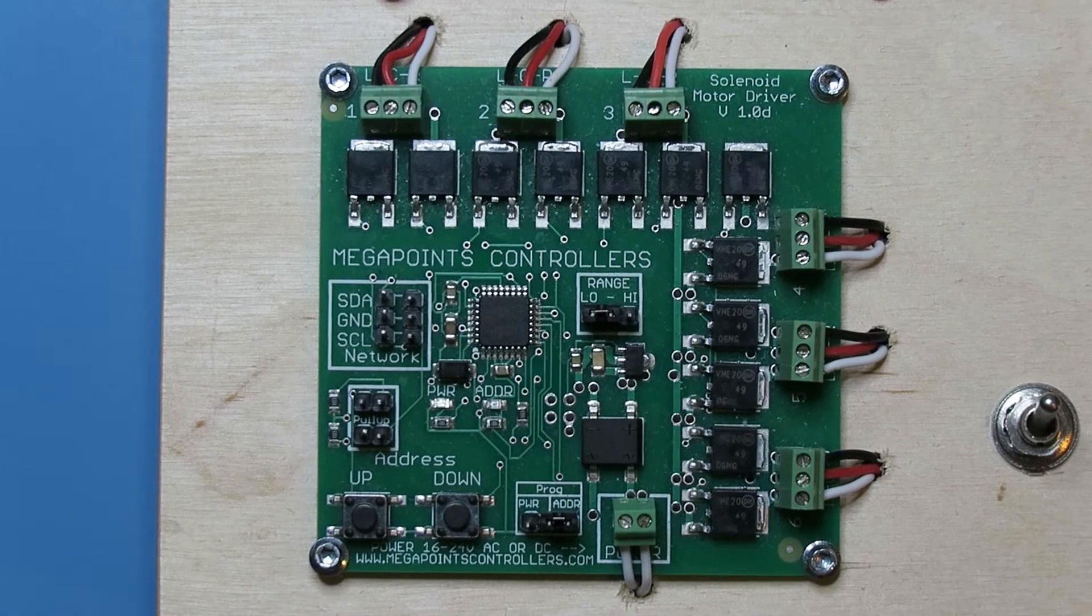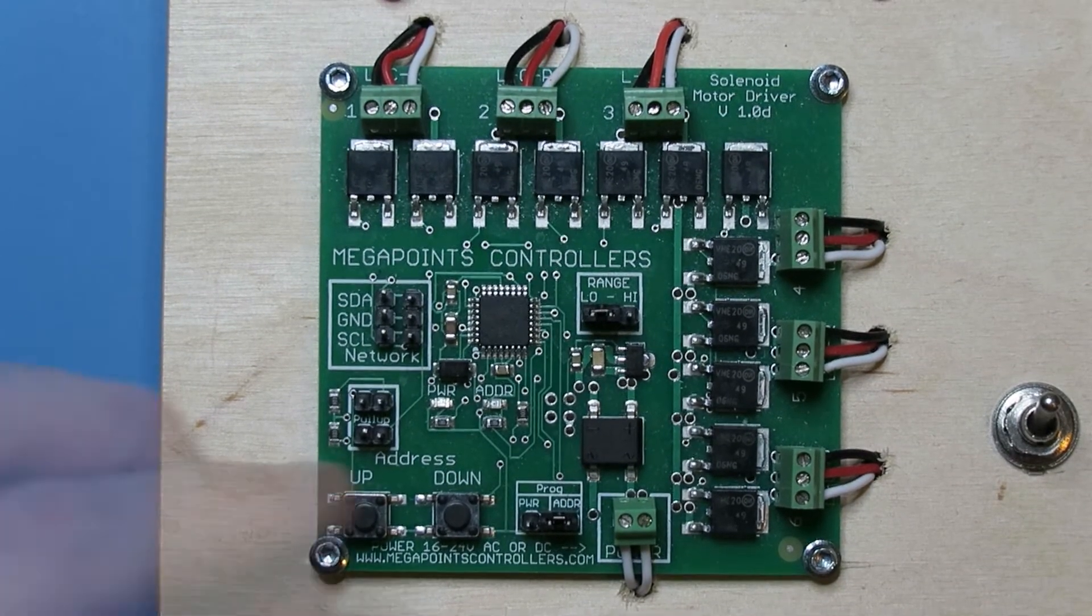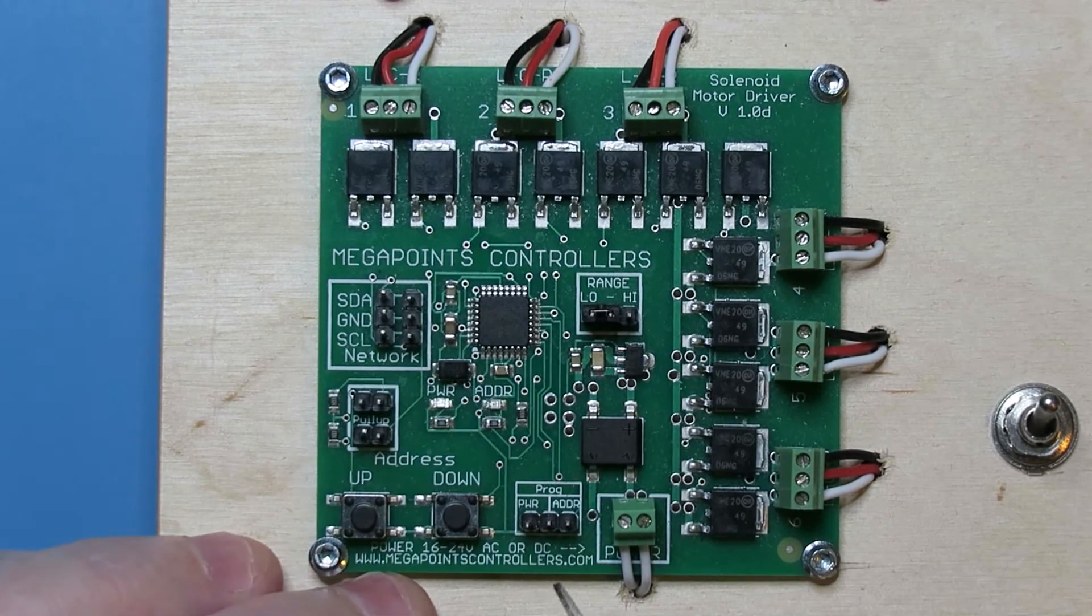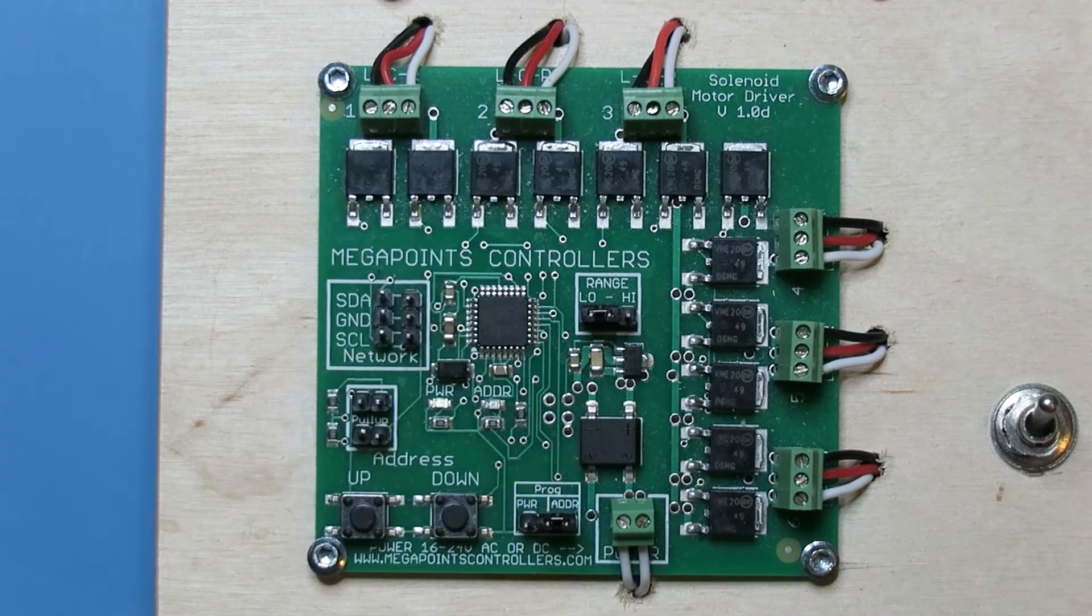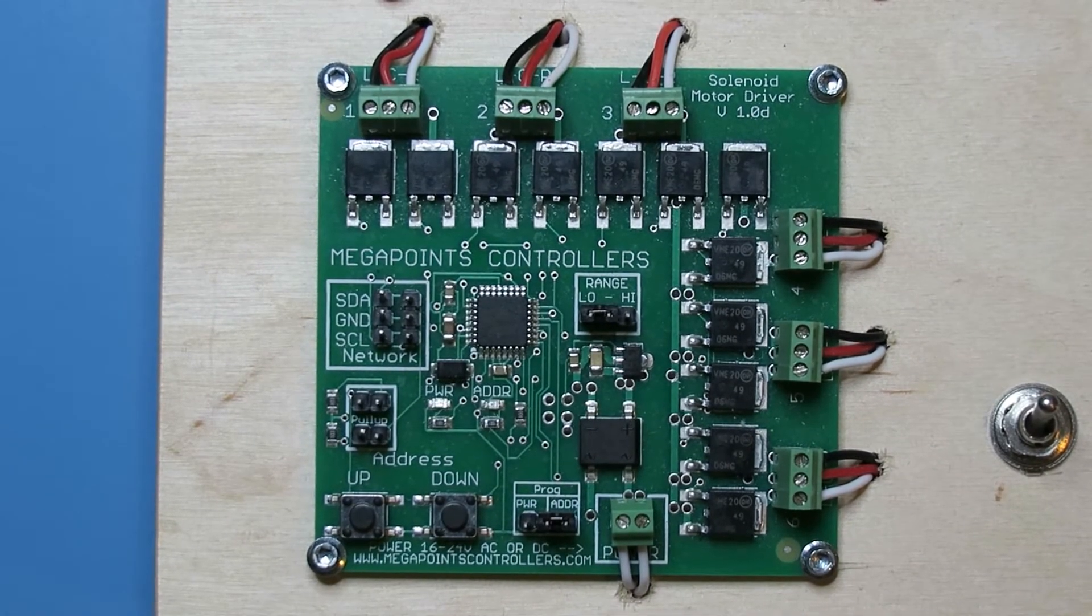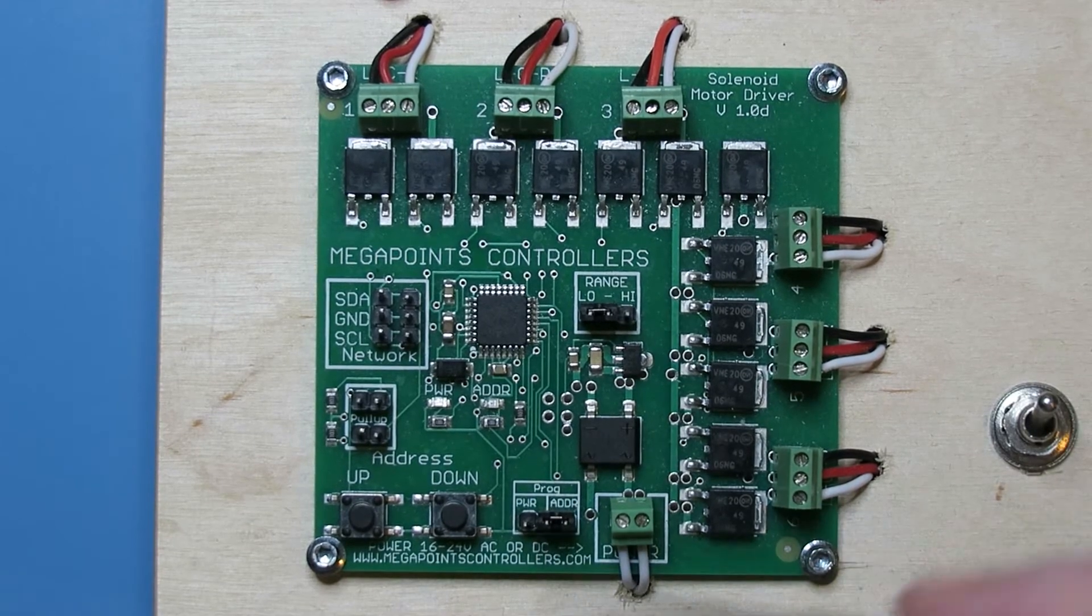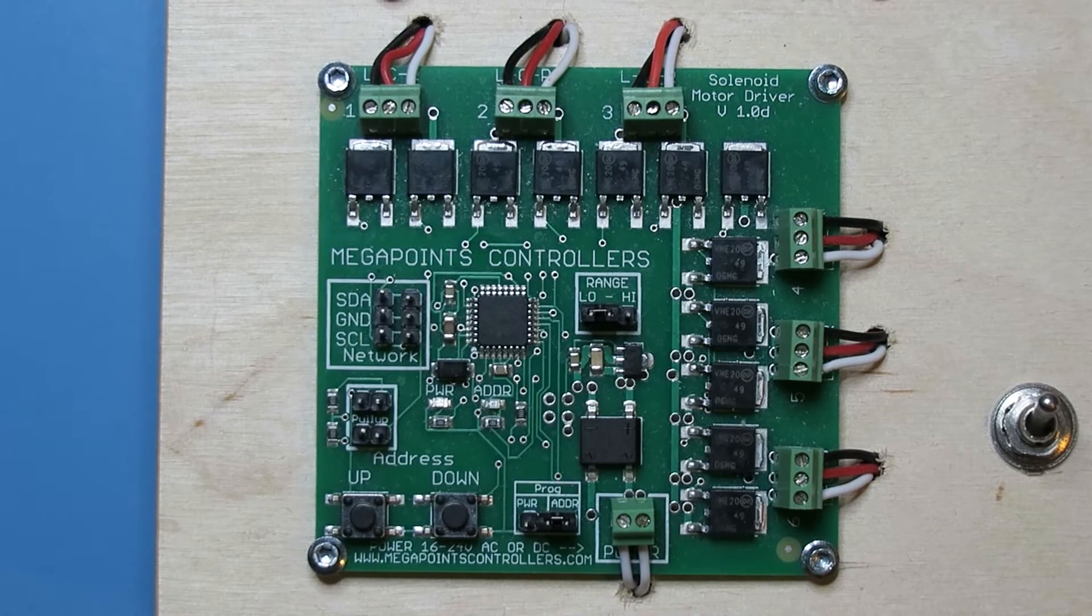So let's take a look at the jumpers that affect the address range or the addressing of this board. The first jumper must be in the ADDR range or to the right. By dropping it on the right hand side, you're configuring these two buttons to control the address rather than on the left, the PWR or power output adjustment.